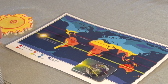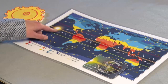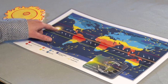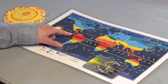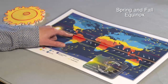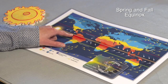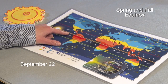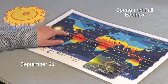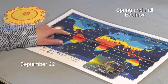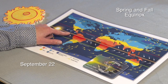When the Sun is reaching the Earth at the equator at a right angle, these are our spring and fall equinoxes. Our fall equinox is September 22nd, and this is the day when we have equal amounts of day and night.